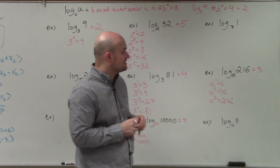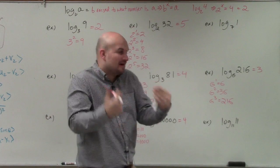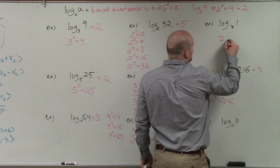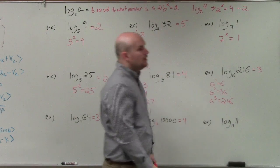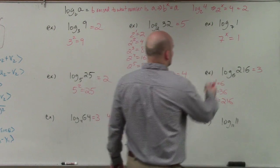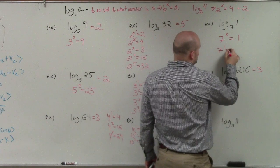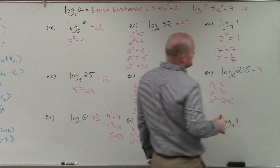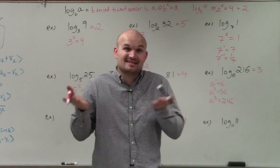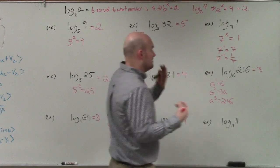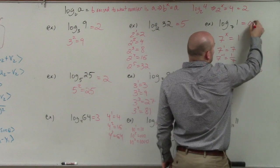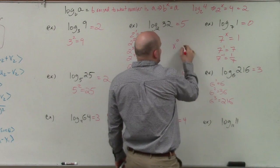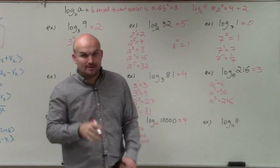The next two are ones where, as long as you say out loud what the logarithm means, they'll make more sense. 7 raised to what number equals 1? If you do 7 to the first power that's 7, and 7 to the negative first is 1 over 7. But any number raised to the 0 power equals 1 — always. So the answer is 0.